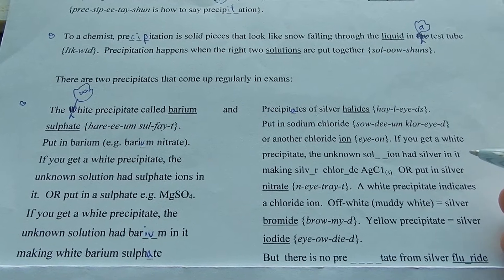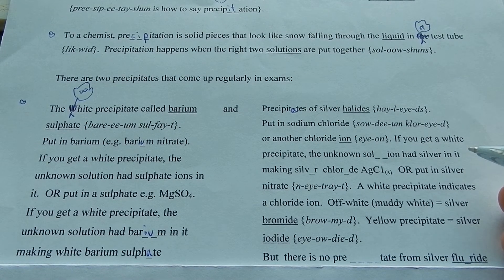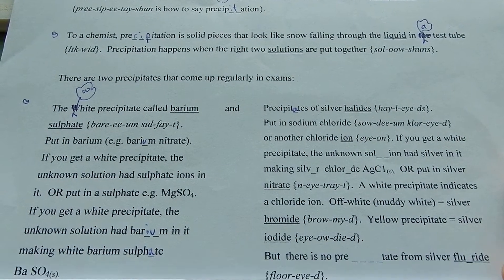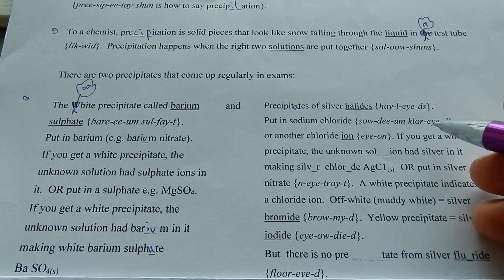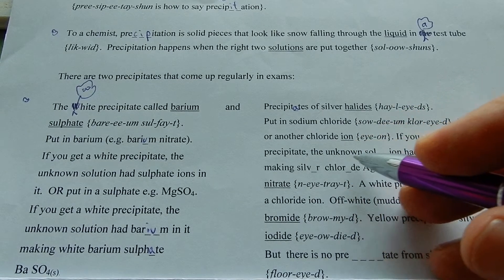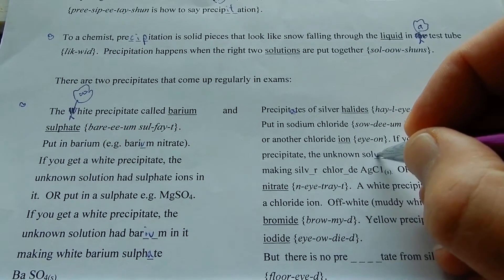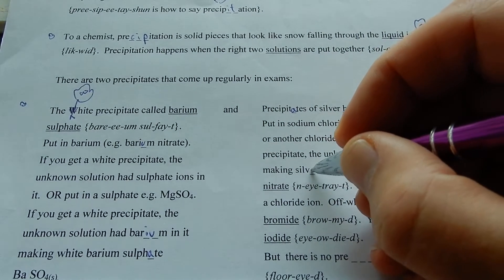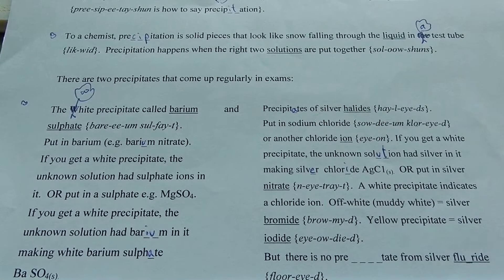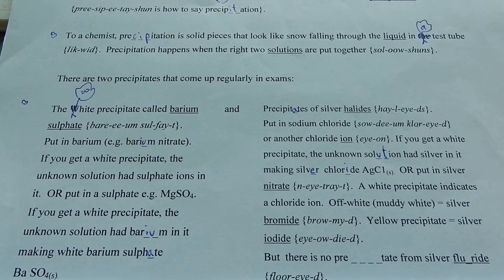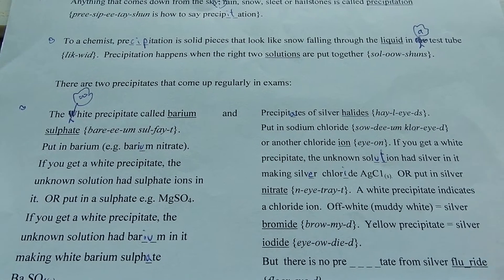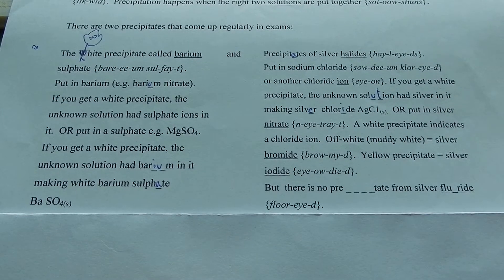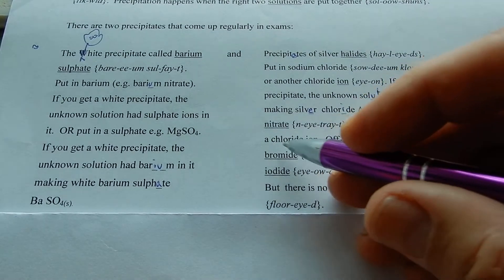If you just put some barium in, put in sodium chloride or another chloride ion. If you get a white precipitate, the unknown solution had silver in it, making silver chloride, AgCl.